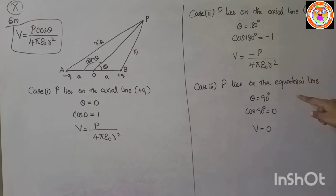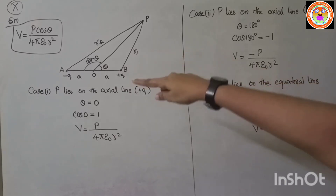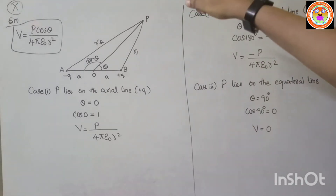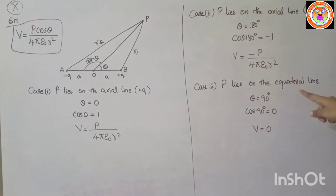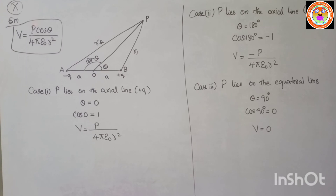Case 3: Point P lies on the equatorial line, exactly perpendicular to the dipole. Here theta = 90°, so cos 90° = 0. Therefore V = 0.